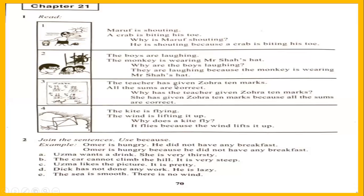The teacher has given Zohra 10 marks. All the sums are correct. Why has the teacher given Zohra 10 marks? She has given Zohra 10 marks because all the sums are correct. The kite is flying — the wind is lifting it up. Two sentences with a full stop at the end. Then the question: why does a kite fly? It flies because the wind lifts it up.